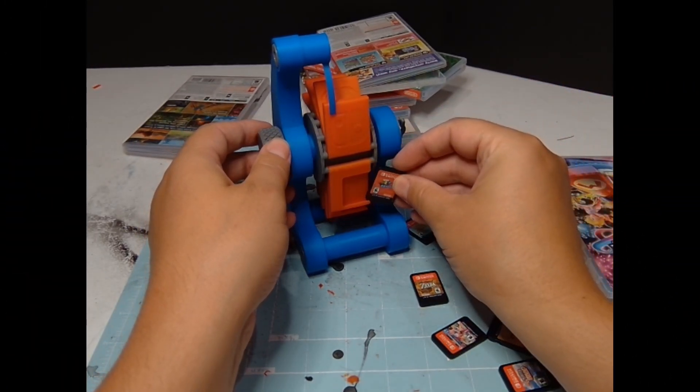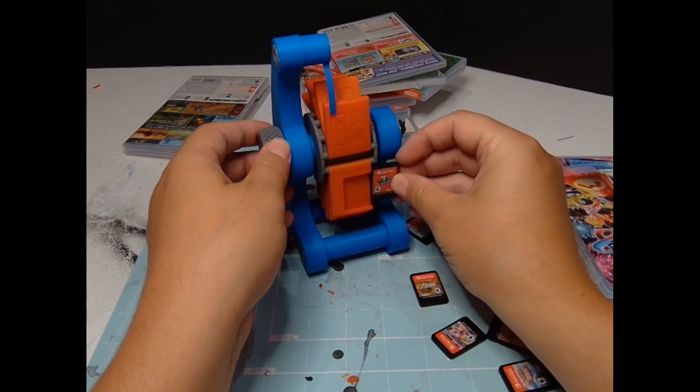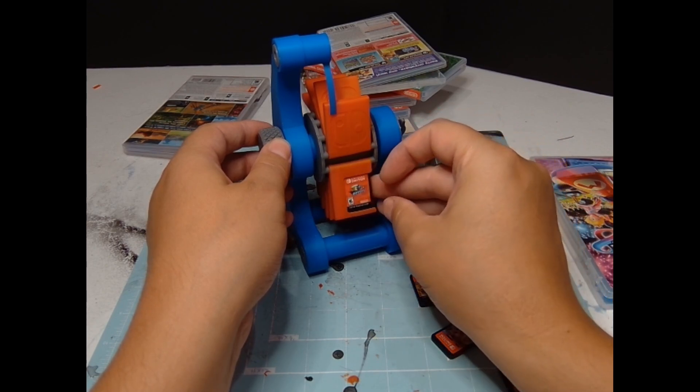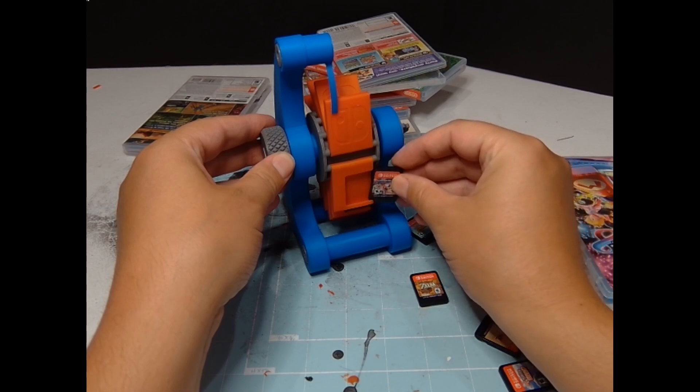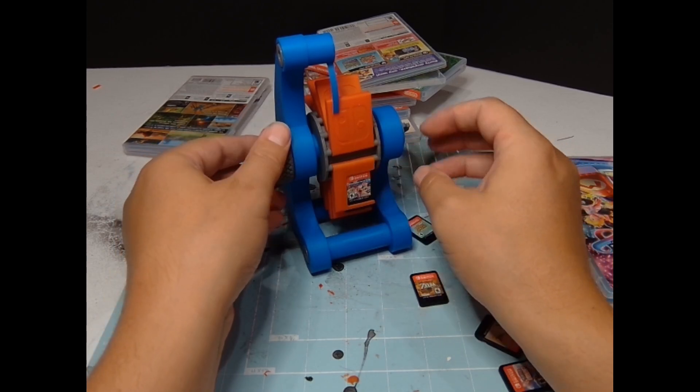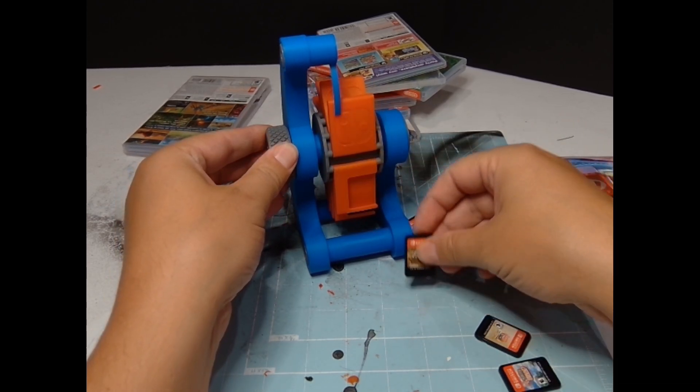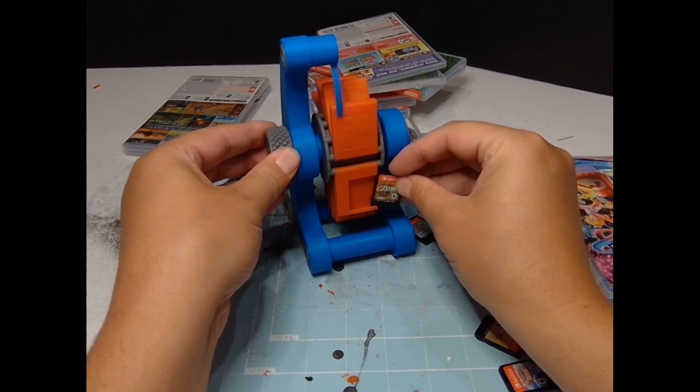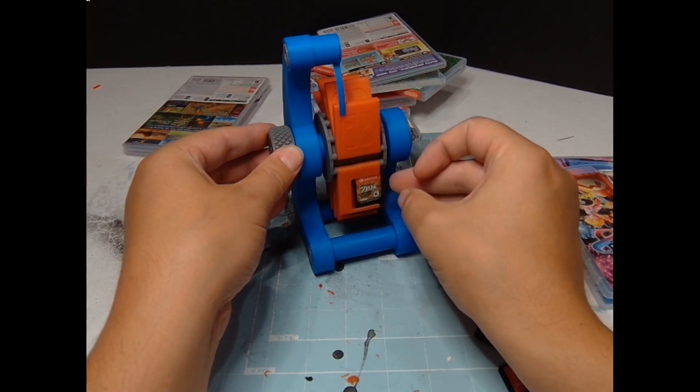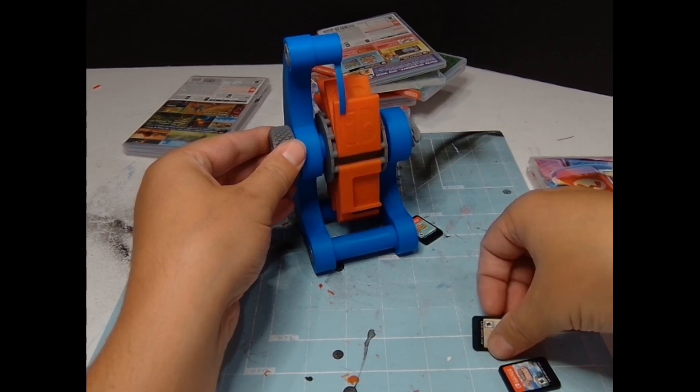So now we're going to put some Nintendo Switch games in it and I'm going to show you how it works. They fit perfectly in it. They don't fall out flipping through. I haven't had one fall out yet. I will in the future, I think I want to maybe print every other one in TPU or every single one in TPU because TPU is a rubber and it will be like a softer kind of impact. You won't have that clicking sound or anything like that unless you want it. Maybe that'd be perfect.